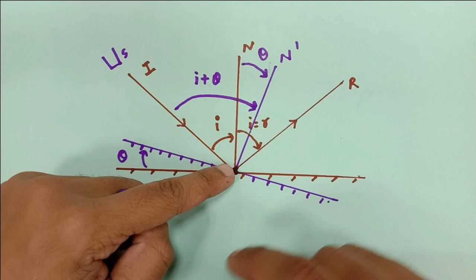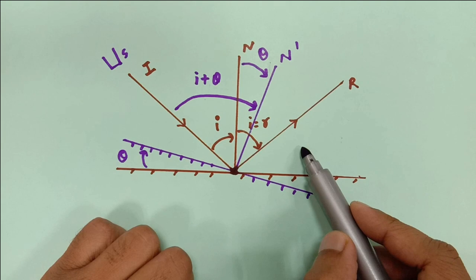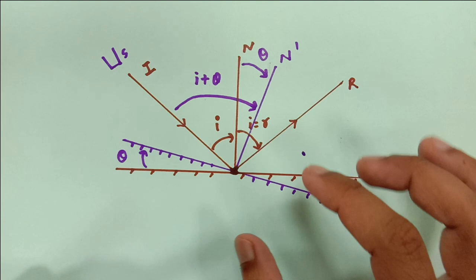It is because the incident ray makes angle I plus theta with the normal, which the reflected ray also makes — I plus theta with the normal. So let me quickly judge that somewhere around here the reflected ray should be.